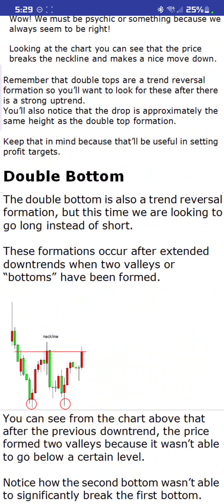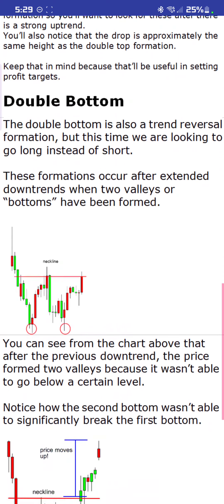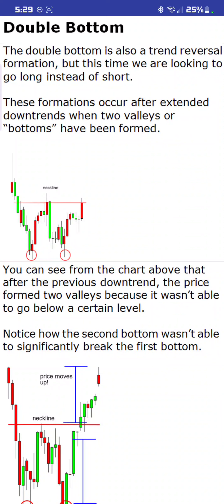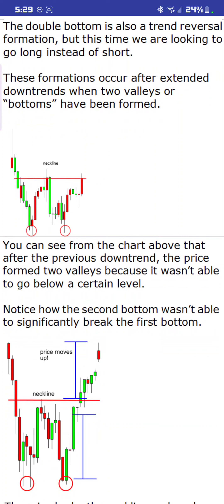The double bottom is also a trend reversal formation, but this time we are looking to go long instead of short — we are looking to enter a long position when you see this pattern play out. These formations occur after extended downtrends when two valleys or bottoms have been formed. This is the same thing as the double top, just inversed. You can see from the chart that after the previous downtrend, the price formed two valleys because it wasn't able to go below a certain level. Notice how the second bottom wasn't able to significantly break the first bottom.